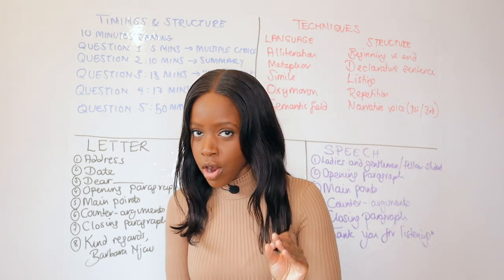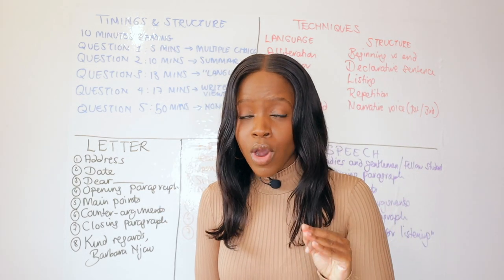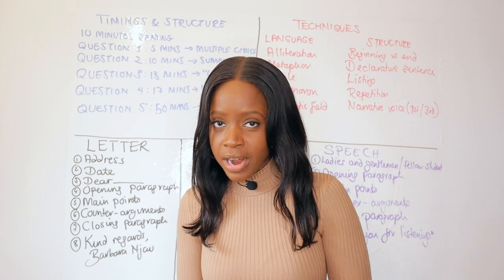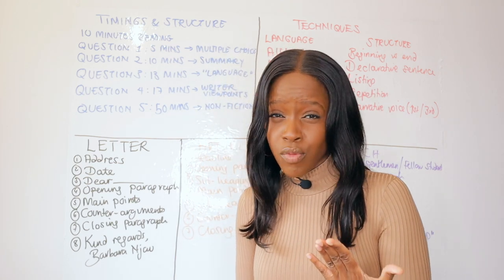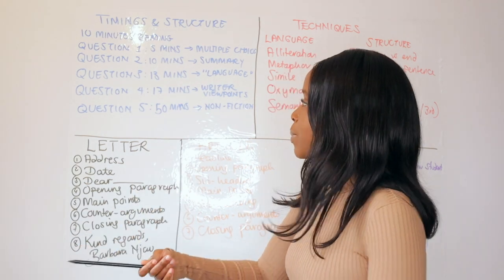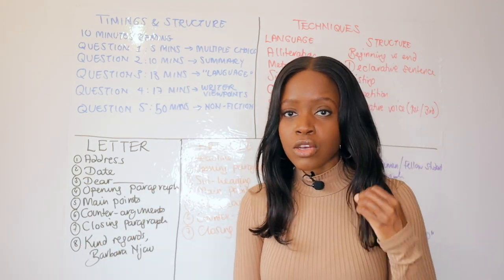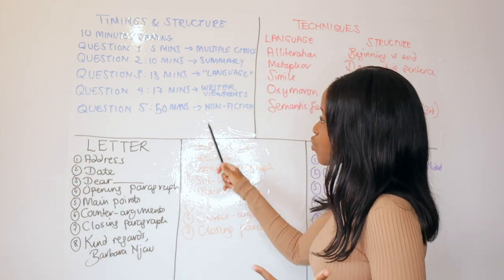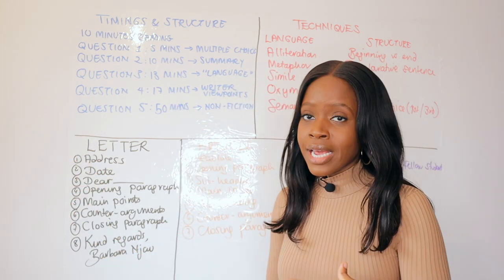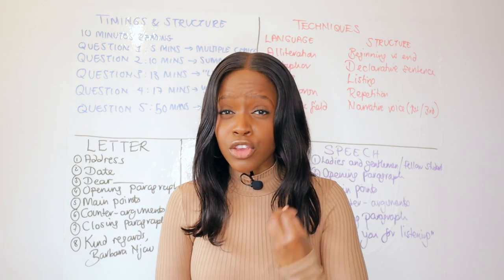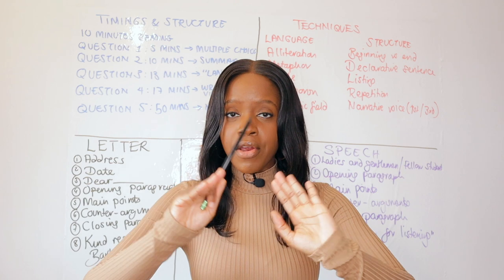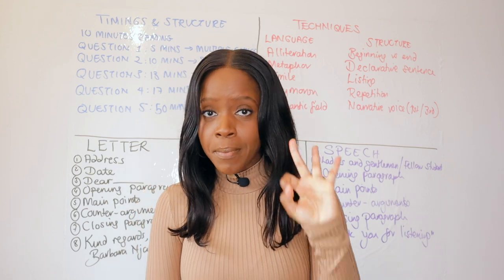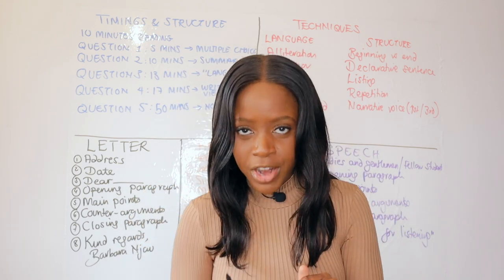Question 3 is the language question, worth 12 marks. The great thing is it's not a comparison question — you just look at one source and talk about how the writer uses language to illustrate what the source is discussing. As it's worth 12 marks, spend a max of 13 minutes on it. Question 4 is the big comparison question where you write about writer viewpoints. Worth 16 marks, you'll be working really hard because you're constantly comparing the two texts. Spend a max of 17 minutes on this question and aim to write three comparison paragraphs, comparing both texts consistently using the PEEL framework.